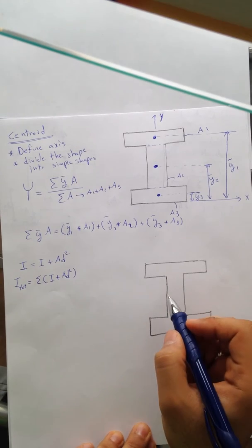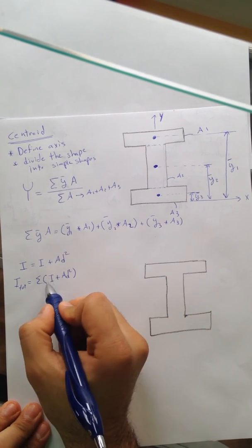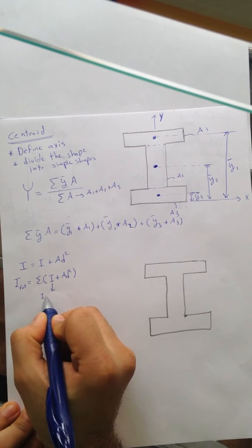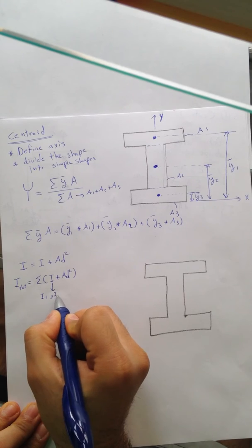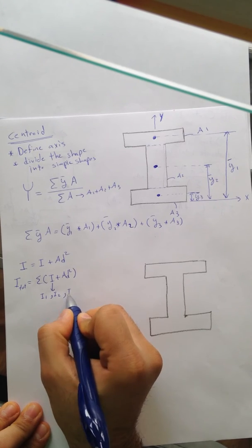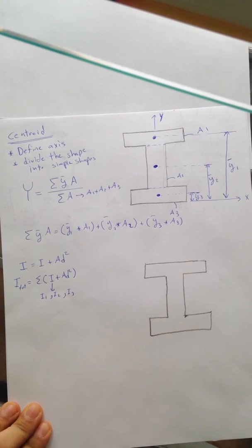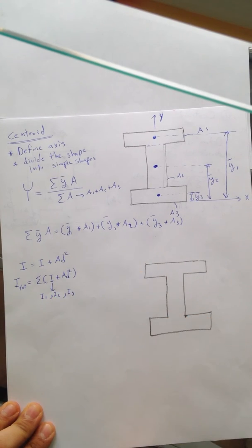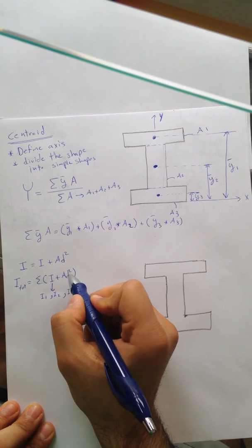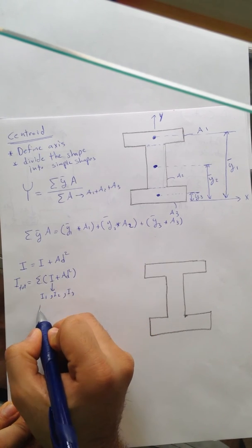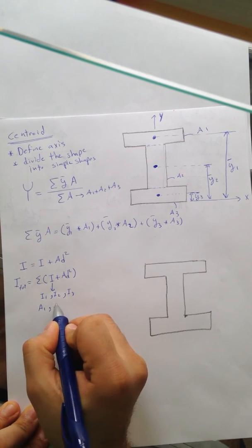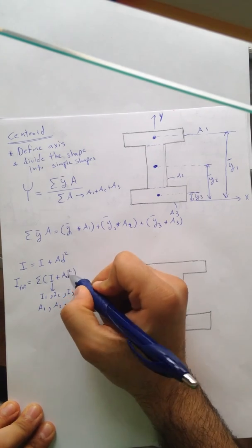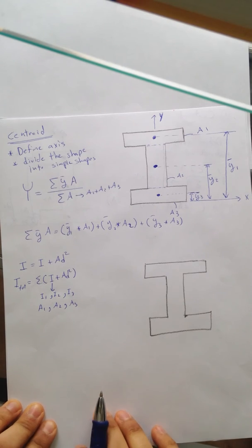So we're going to find Ī + Ad² for shape 1, for shape 2, for shape 3, and sum them all up. For I, that gives us I1, I2, I3. For A, we have A1, A2, A3. But D we don't know yet — let's look at this example.